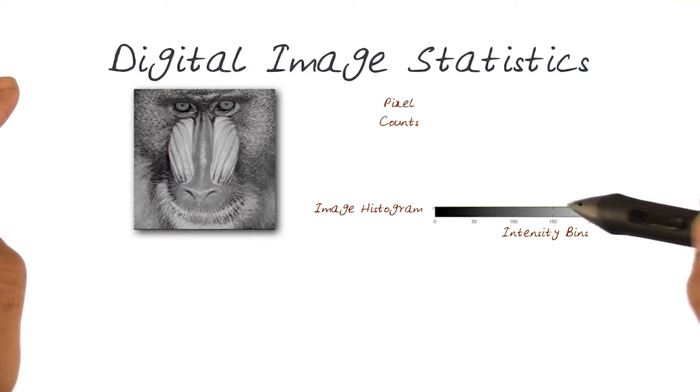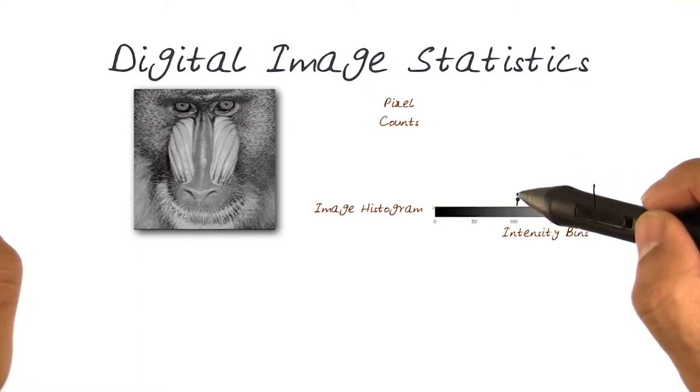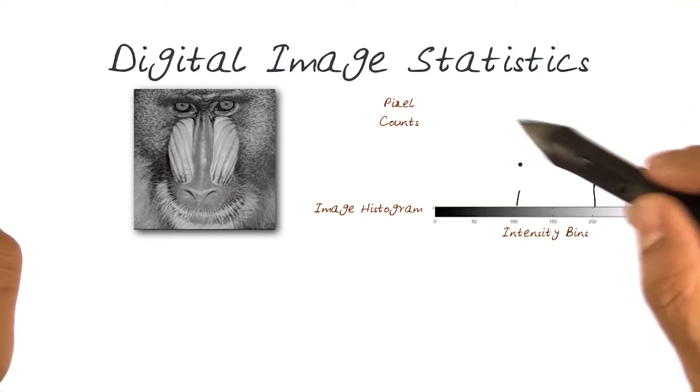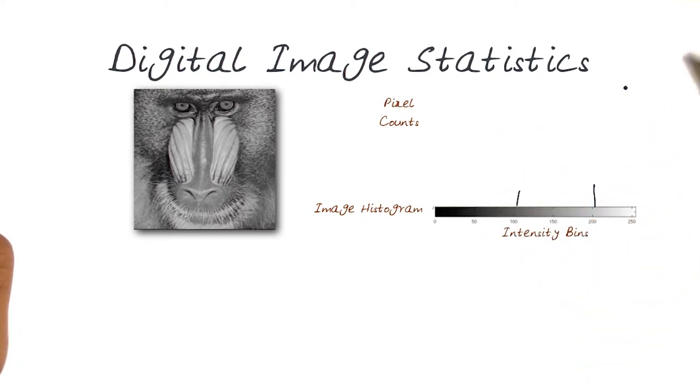Then I find another one, might be 125, it might move around. It starts measuring how many pixels have a value of 200, how many have a value of 100. That creates a histogram of the image and gives you statistics of that image.